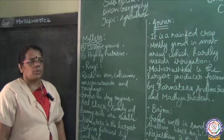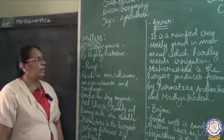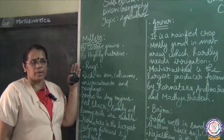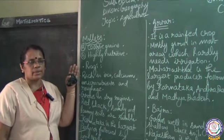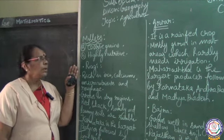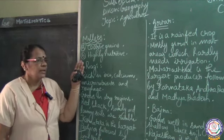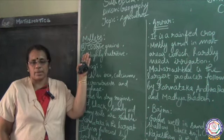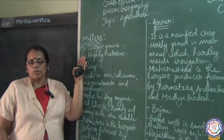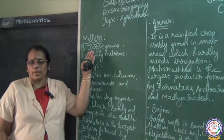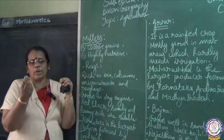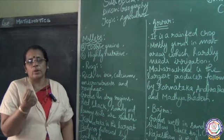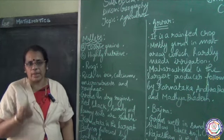Today I am going to start with millets. The topic for today is millets in agriculture. The two important characteristic features of millets are: first, millets are coarse grains — when you see their appearance, they will be rough in nature.